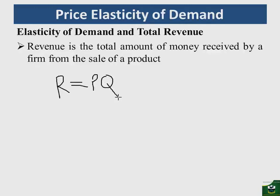For example, if the price is 10 per unit and the firm has sold 9 units, then the revenue for the firm is equal to 90. Remember that price has units — if we are using dollars, then revenue will also be measured in dollars, giving us 90 dollars as the total revenue for the firm.